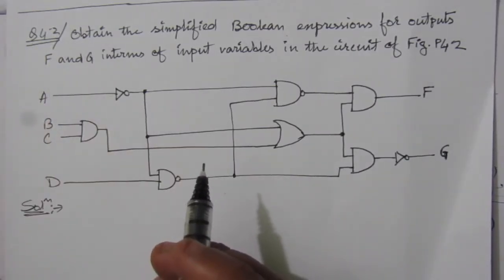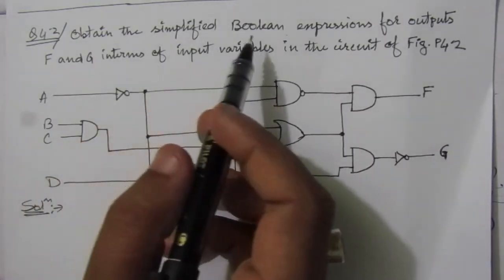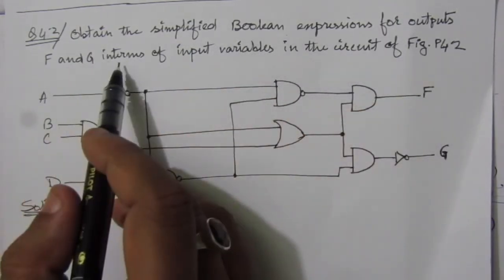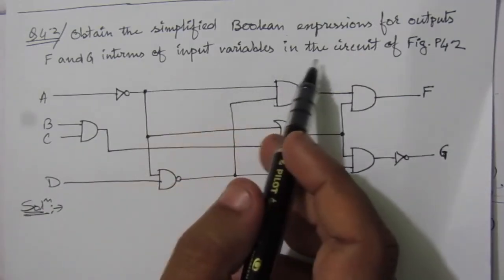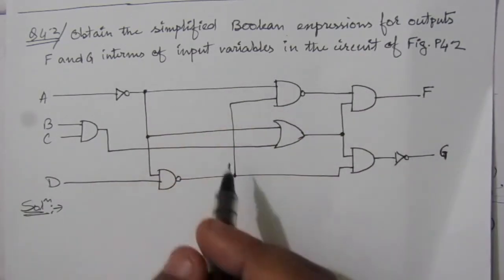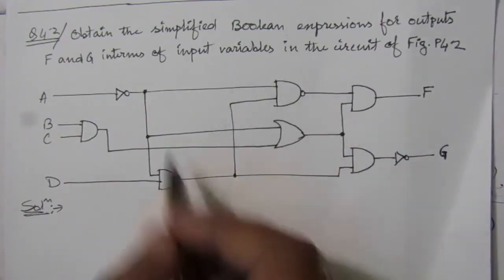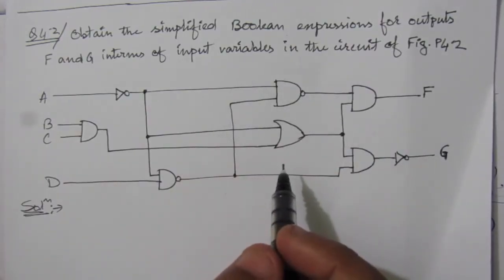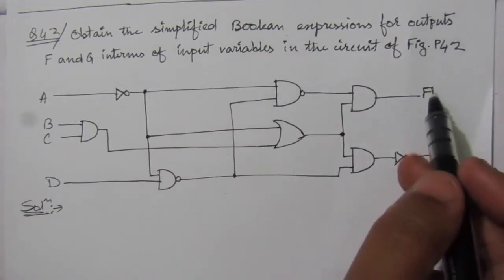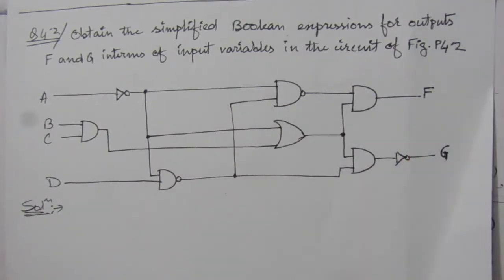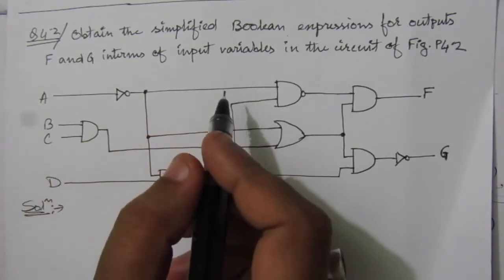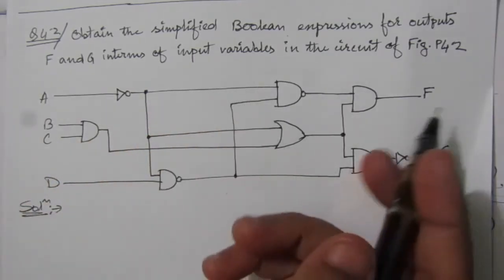The problem is: obtain the simplified boolean expressions for the outputs F and G in terms of input variables in the circuit of figure P4.2. So this is the given figure and we have to find out the simplified boolean expressions for outputs F and G. The inputs are A, B, C, and D.